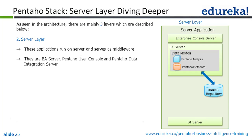The server layer is the middle layer of the Pentaho BI architecture. These applications run on the server and serve as the middle layer. There is the BA server, the Pentaho user console, and the Pentaho data integration server. The BA server is where you deploy your reports and dashboards to the end user. The user console handles user role mapping, security, and scheduling — you can schedule jobs and reports to run at specific times. The Pentaho data integration server is for running your ETL jobs and transformations.